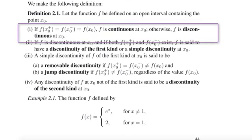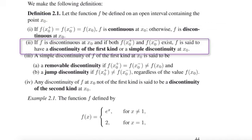This is what I do right here, number 1. If the left- and the right-sided limits exist, but they are not the same, then we do have a jump. And we call this a discontinuity of the first kind.